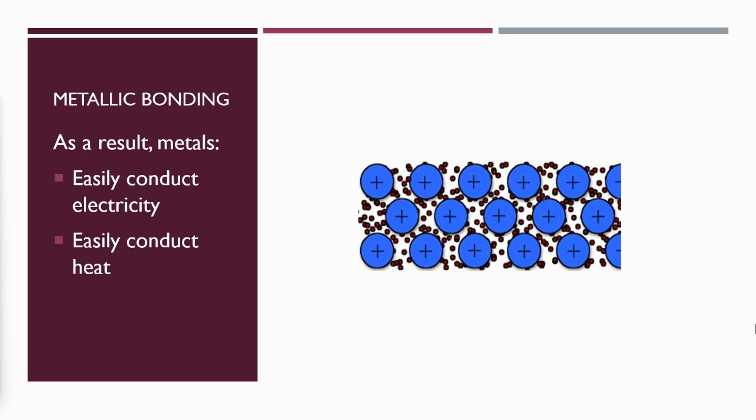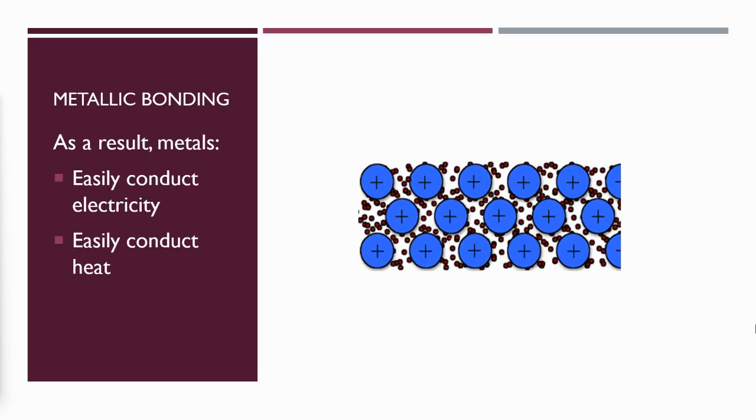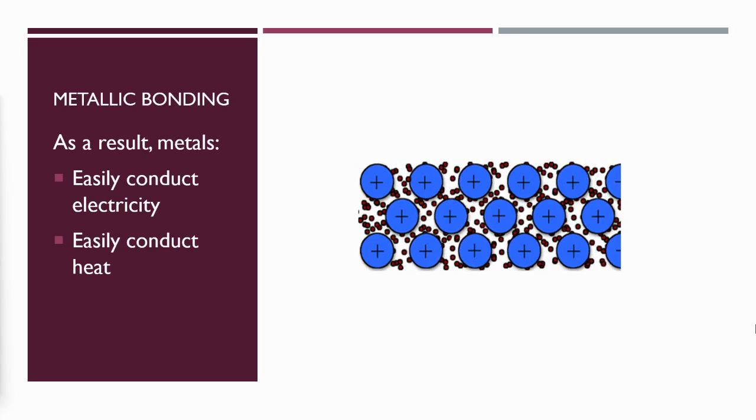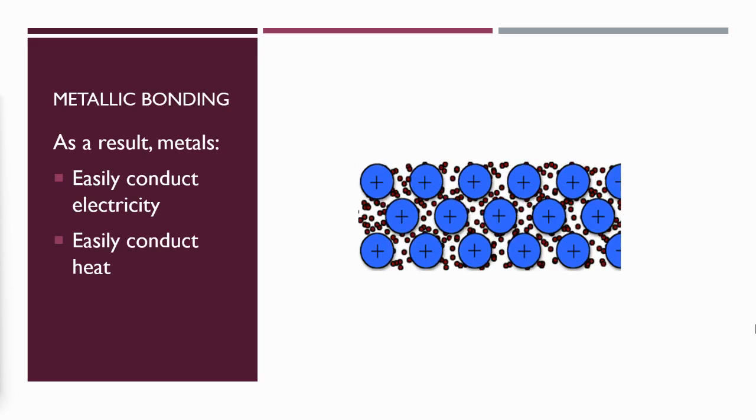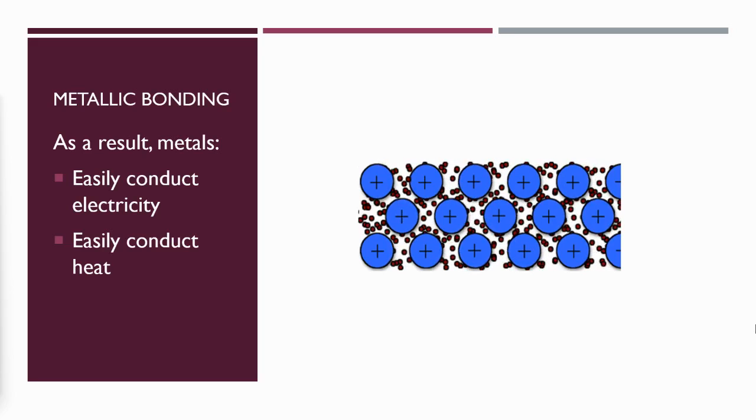Metals also conduct heat very well because the atoms don't have to be located in a specific position within a metallic solid. They can vibrate more easily. The freedom of the electrons moving between the atoms allows for the vibration of the atoms more easily. Vibrational energy is heat energy.